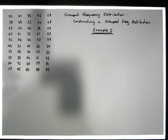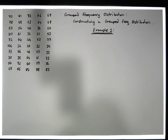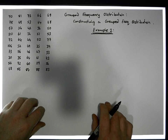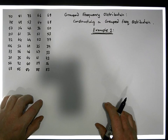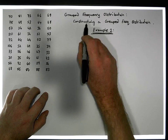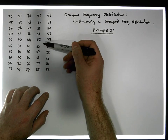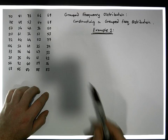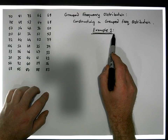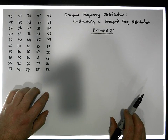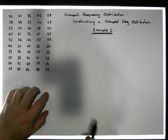Hi guys, this is Jonathan Lambert with the Mathematics Development and Support Service at the National College of Ireland. In this short video, another video in our series dealing with group frequency distributions, we're going to concentrate on how to construct a group frequency distribution given a raw data set. This is example two — I've already got a video up in relation to this, but this is just another example.